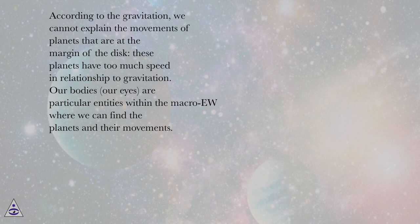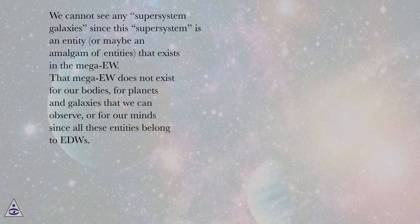Our bodies, our eyes, are particular entities within the macro-EU where we can find the planets and their movements. We cannot see any supersystem galaxies since this supersystem is an entity, or maybe an amalgam of entities, that exists in the mega-EU. That mega-EU does not exist for our bodies, for planets and galaxies that we can observe, or for our minds since all these entities belong to EDWs.